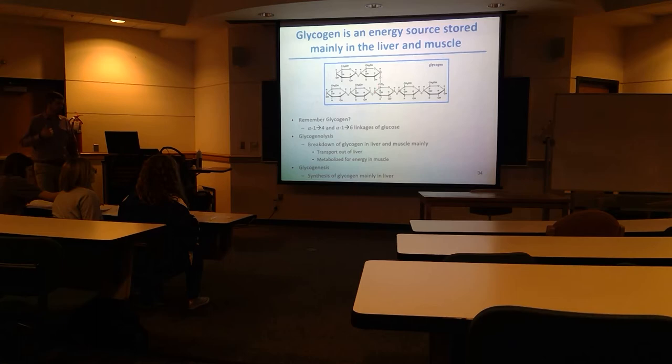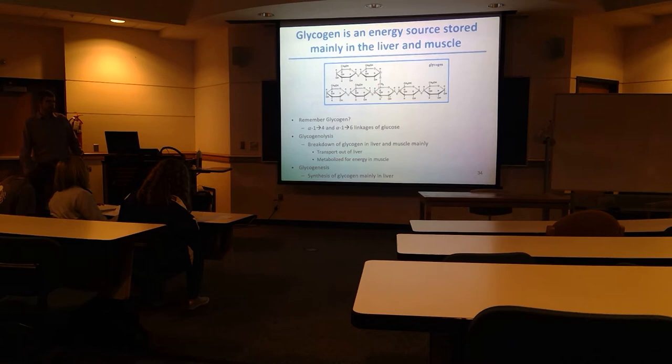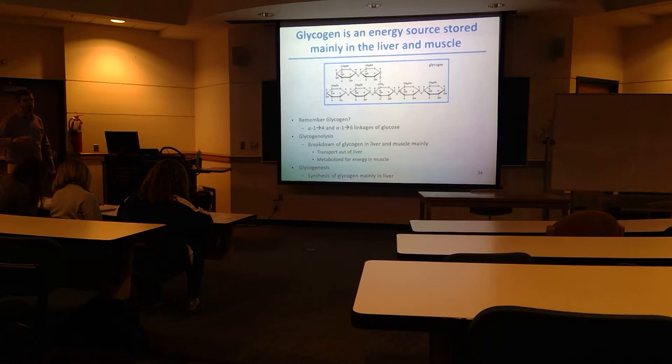Glycogenesis — the genesis of glycogen — synthesizes glycogen. A lot of that mainly happens in the liver, though some happens in the muscle. There are two important enzymes, one for glycogenolysis and one for glycogenesis, and the first enzyme in each of these is going to be regulated.